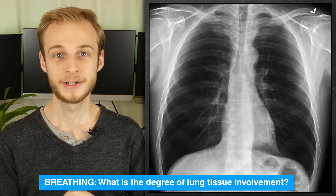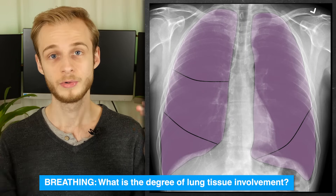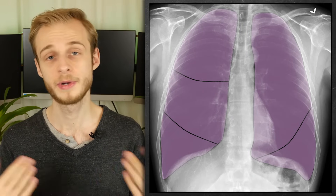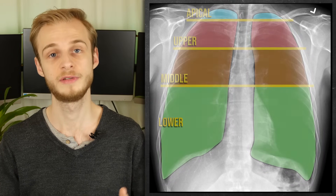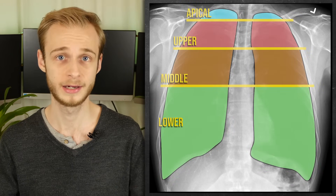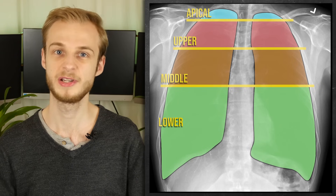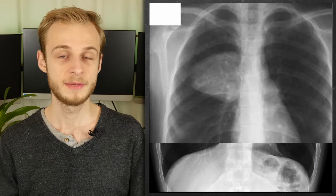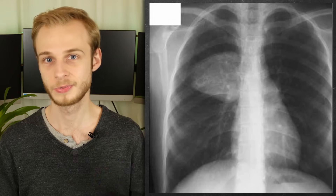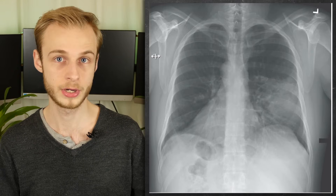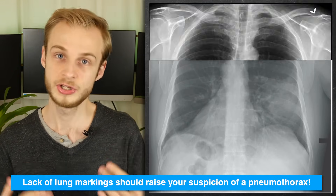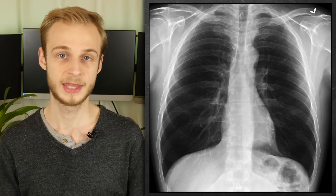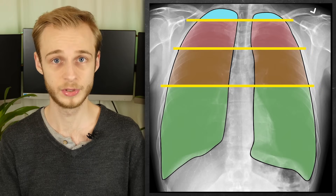B is for breathing, so now it's time to look at the lungs. We normally divide the lungs anatomically into different lobes, but on a chest x-ray we use zones for interpretation, which makes it easy to report where any finding is. For example, here is an image showing a mass in the right middle zone, and here is one showing a left middle zone pneumonia. If you can't see any lung markings at all, this should make you highly suspicious of a pneumothorax. It's also important to check the apices — the very tops of each lung — before you move on.